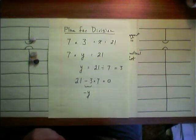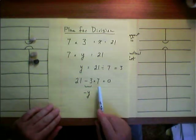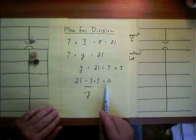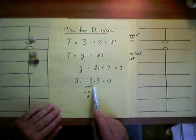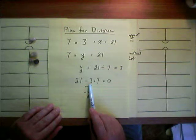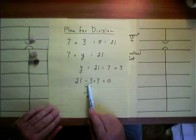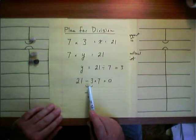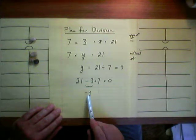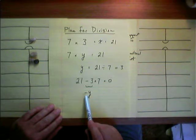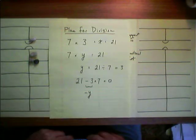What we're going to do is reduce the 21 basically to 0 and keep track of how many 7s we had to subtract to do that, and that'll be negative y, or the negative of our answer.